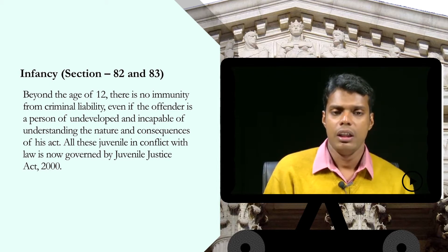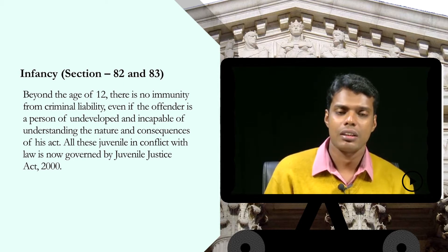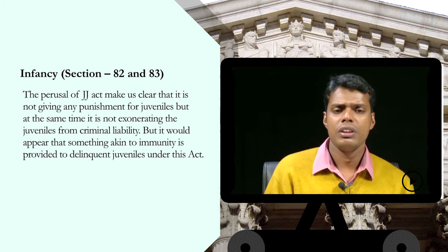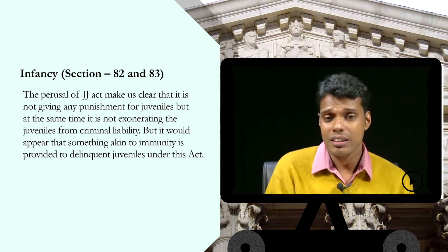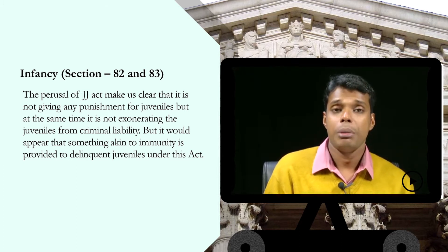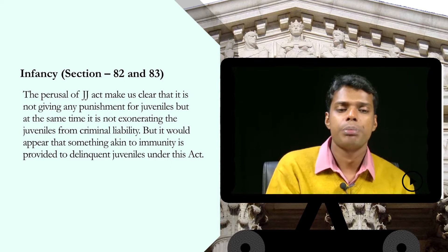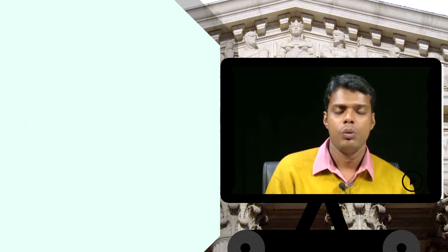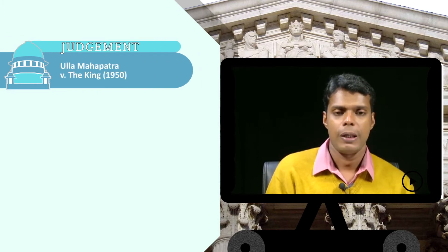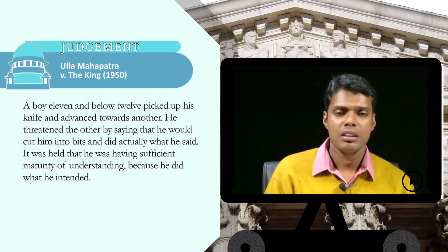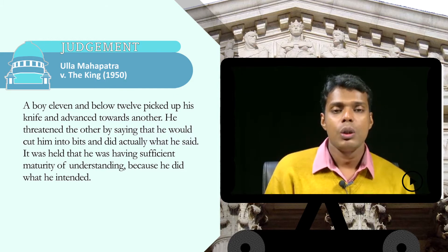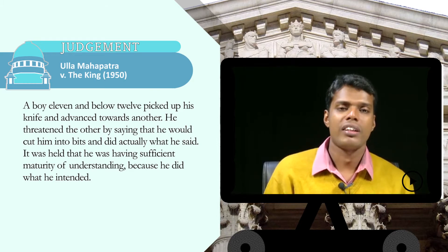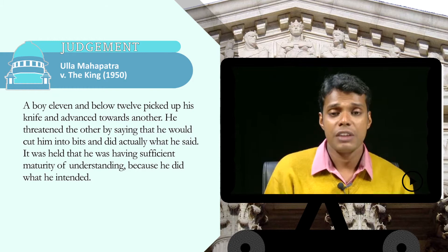All juveniles in conflict with the law are now governed by the Juvenile Justice Act 2000. The Act makes clear that it does not give punishment for juveniles, but at the same time it does not fully exonerate them from criminal liability — something akin to immunity is provided to delinquent juveniles under the Act. In Ulla Mahapatra versus King, a boy aged 11 picked up his knife and advanced towards another, threatened to cut him into bits, and did exactly that. It was held that he had sufficient maturity of understanding because he did what he intended.